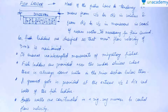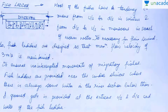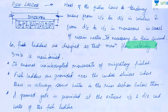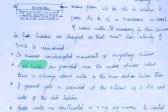Now, fish ladders. Most fishes have a tendency to move from upstream to downstream in winter, and from downstream to upstream in monsoons, most probably in search of warm water. This is necessary for the survival of the fishes. Fish ladders are designed to protect the fishes and maintain a maximum flow velocity of 3 meters per second, ensuring the uninterrupted movement of these migratory fishes.